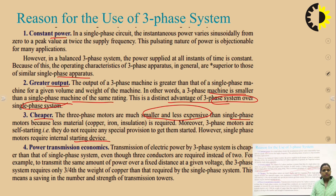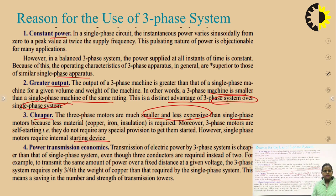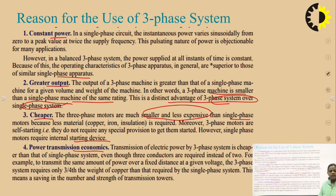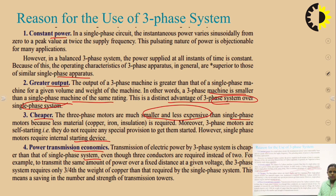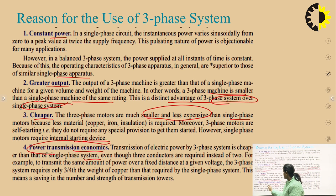Three-phase motors are self-starting — they do not require any special provision to start, whereas single-phase motors require internal starting devices. Another advantage is power transmission economics: transmission of electric power by three-phase system is cheaper than single-phase, requiring only three-fourths the weight of copper for the same power over the same distance, resulting in savings in the number and strength of transmission towers.